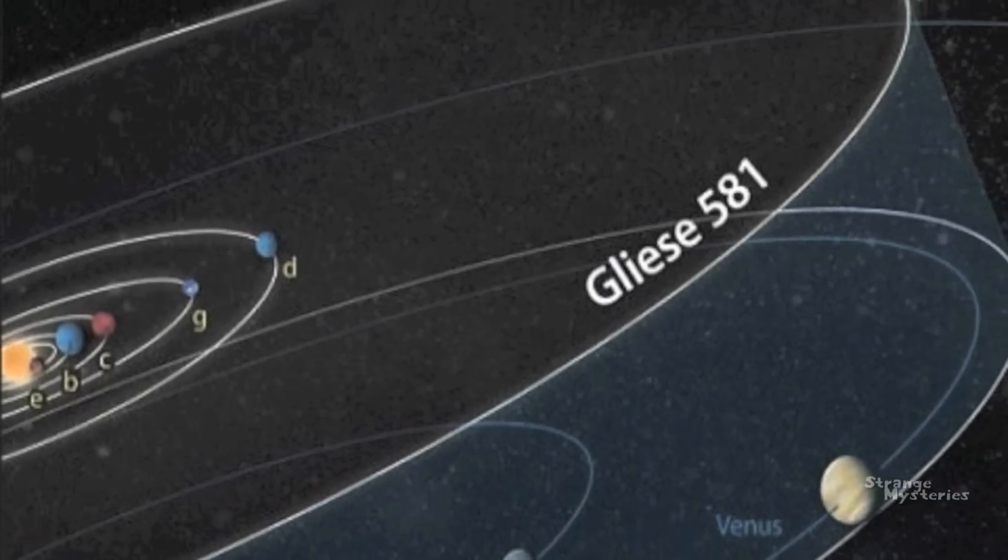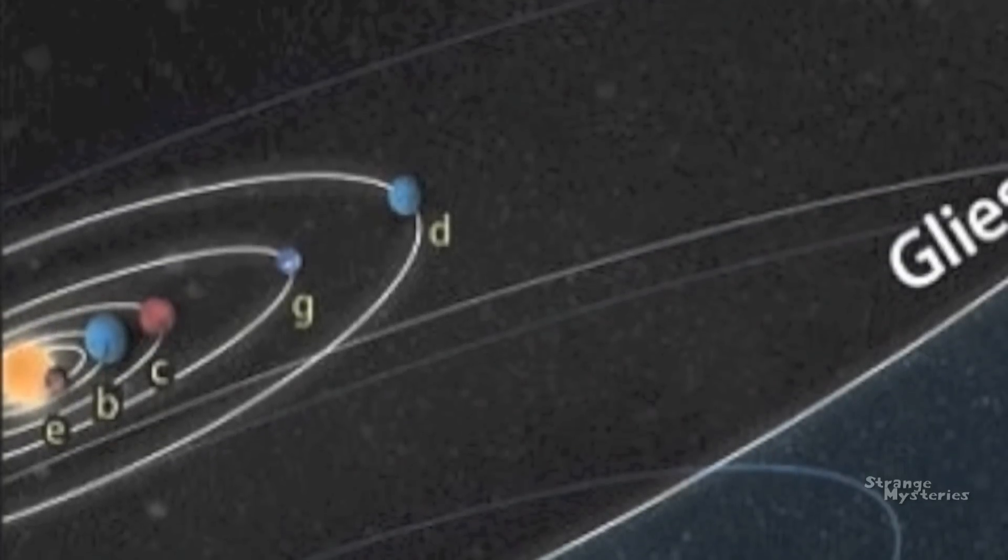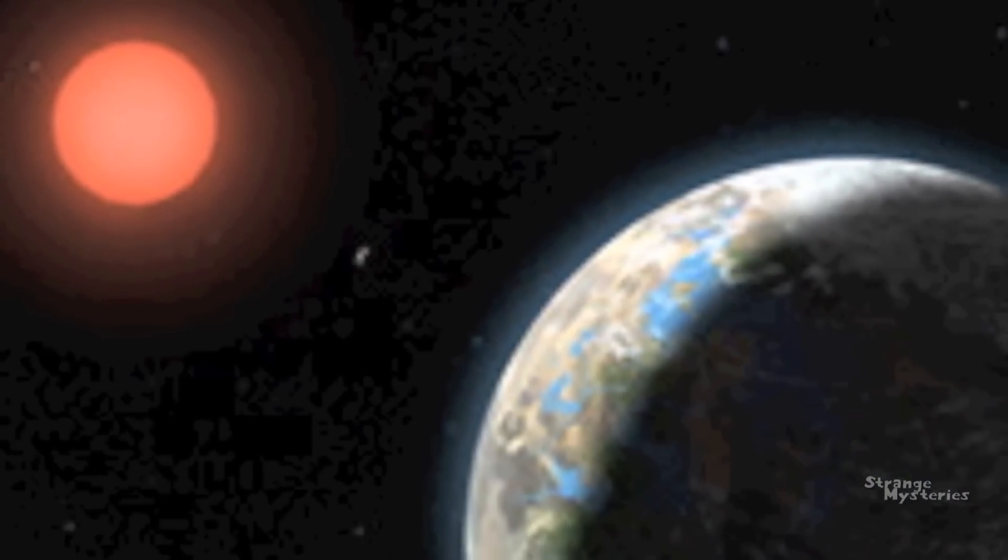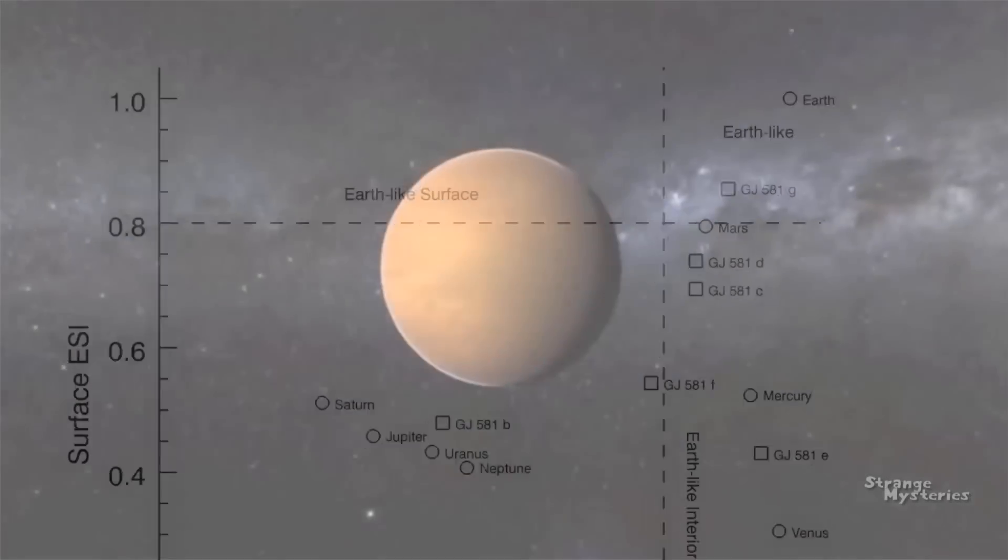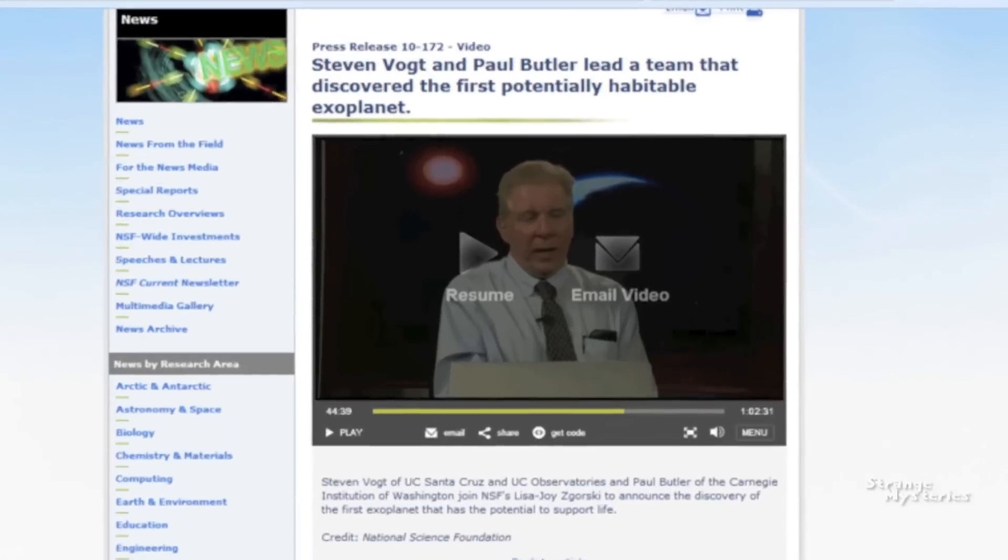It was calculated that Gliese D and G were in that perfect, not-too-hot, not-too-cold Goldilocks zone. Just the ideal distance away from the star to be able to support life. And in fact, some astronomers are 100% certain that they do.